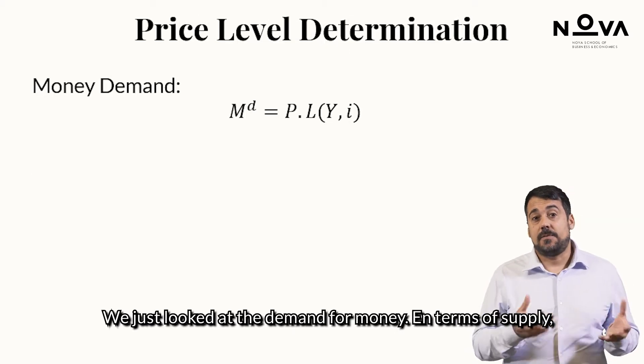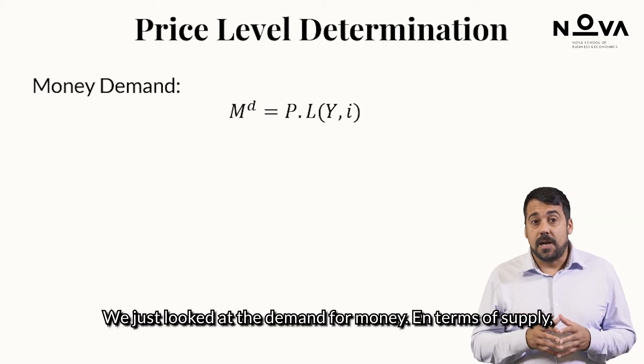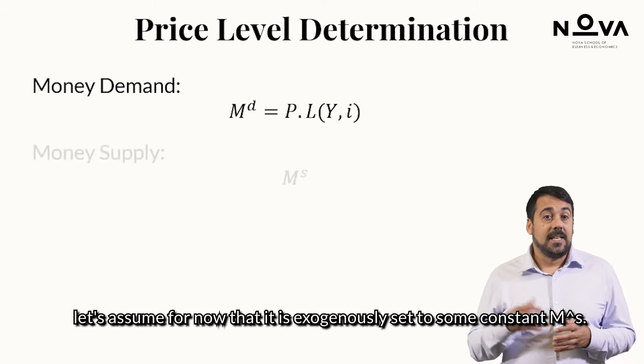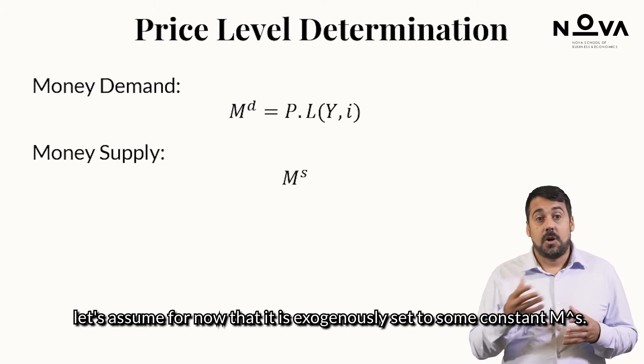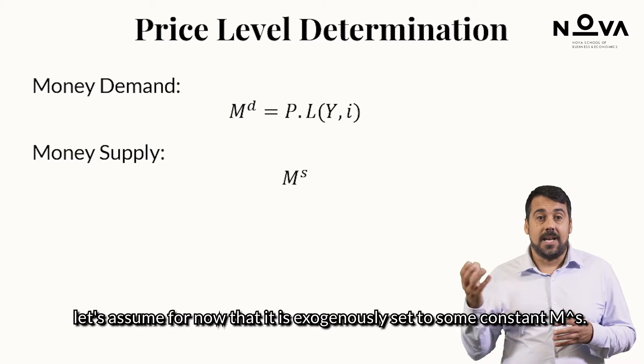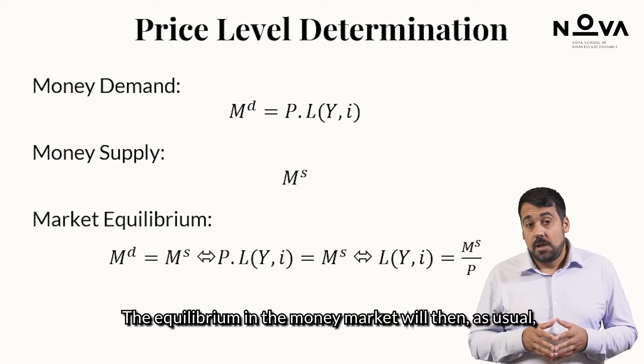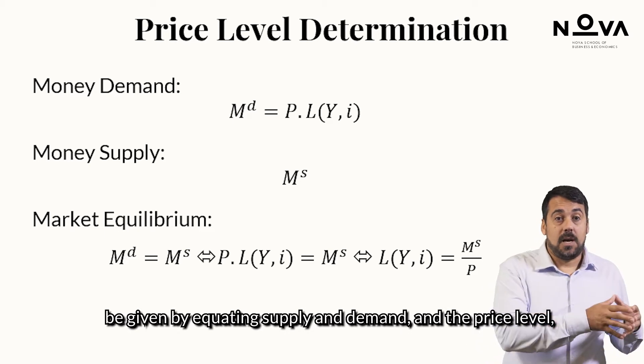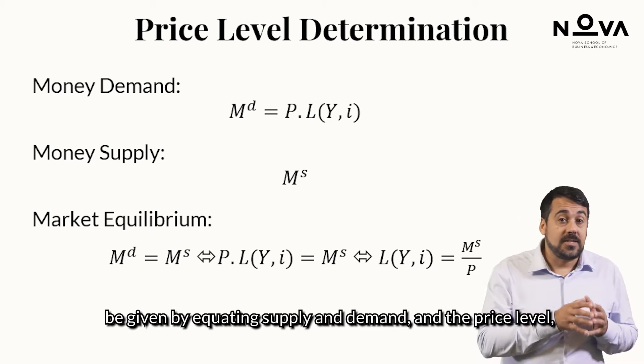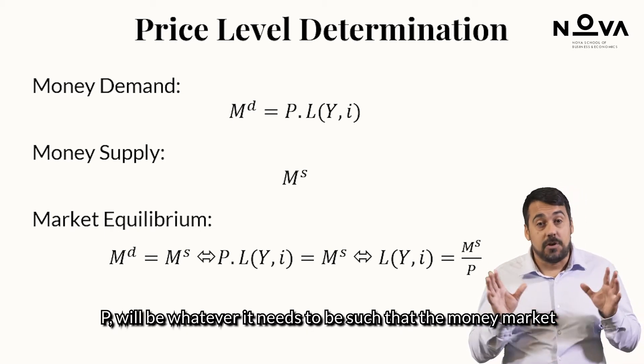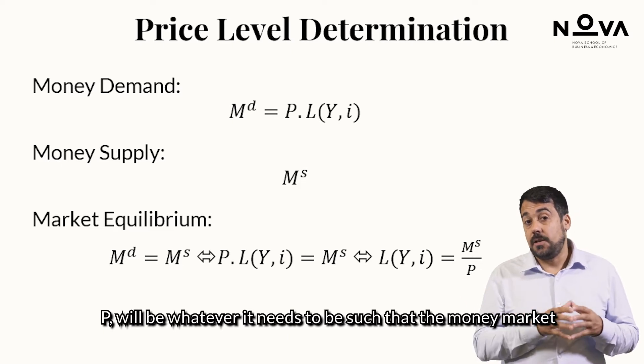We'll just look at the demand for money. In terms of supply, let's assume for now that it is exogenously set to some constant M superscript S. The equilibrium in the money market will then, as usual, be given by equating supply and demand, and the price level P will be whatever it needs to be, such that the money market clears.